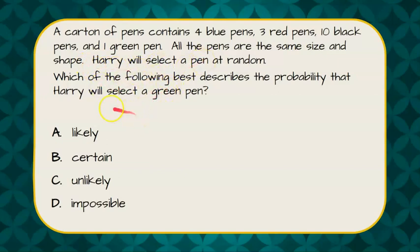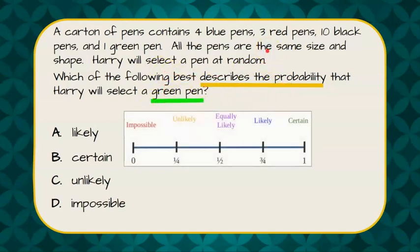Which of the following best describes the probability that he will select a green pen? So we need to do a couple of things. First, we're not finding probability, but we have to describe it, which means we really still need to find it. And we want to know the probability of a green pen out of all of these pens up above.